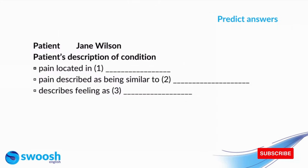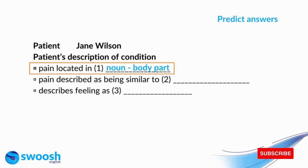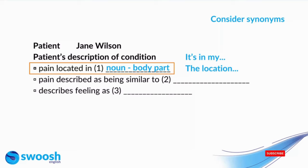Taking a look at a few specific questions, the first thing you're going to do when you look at the gap is to predict the answer. So looking at number one — 'pain located in' — what type of word is going to be in this gap? We know from the sentence that it's going to be a noun, and we can take a pretty good guess that it's likely to be a body part. We're then going to consider how this might be paraphrased in the audio and think about synonyms you might hear. Instead of saying 'the pain is located in,' the patient might simply say 'it's in my' or 'the location of the pain.'